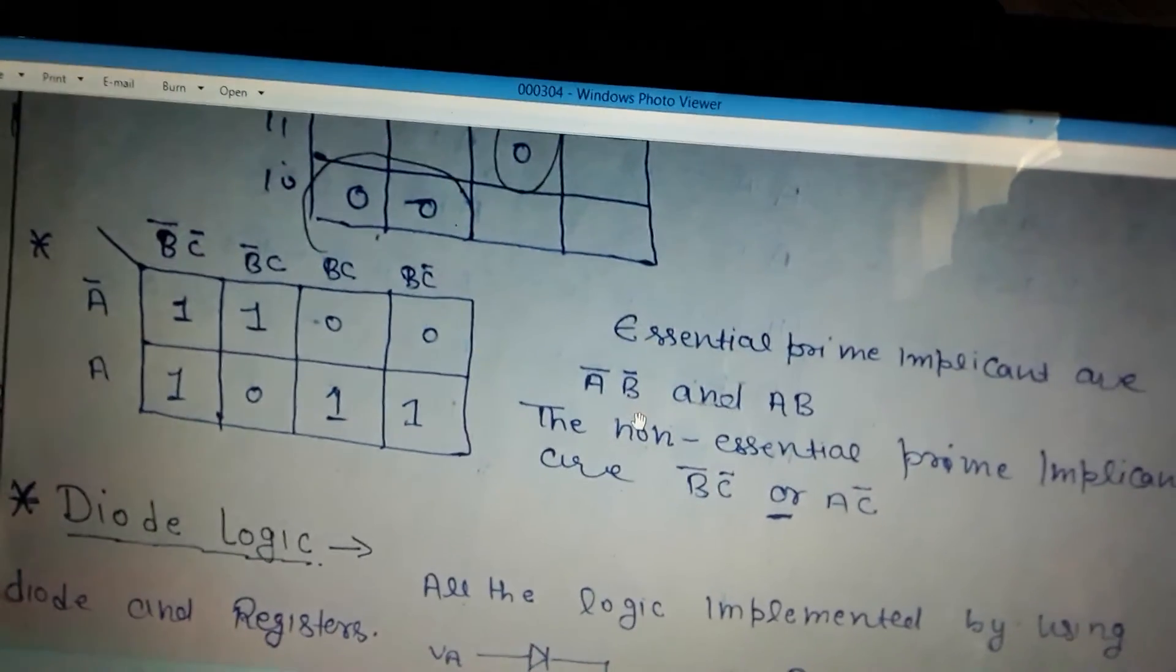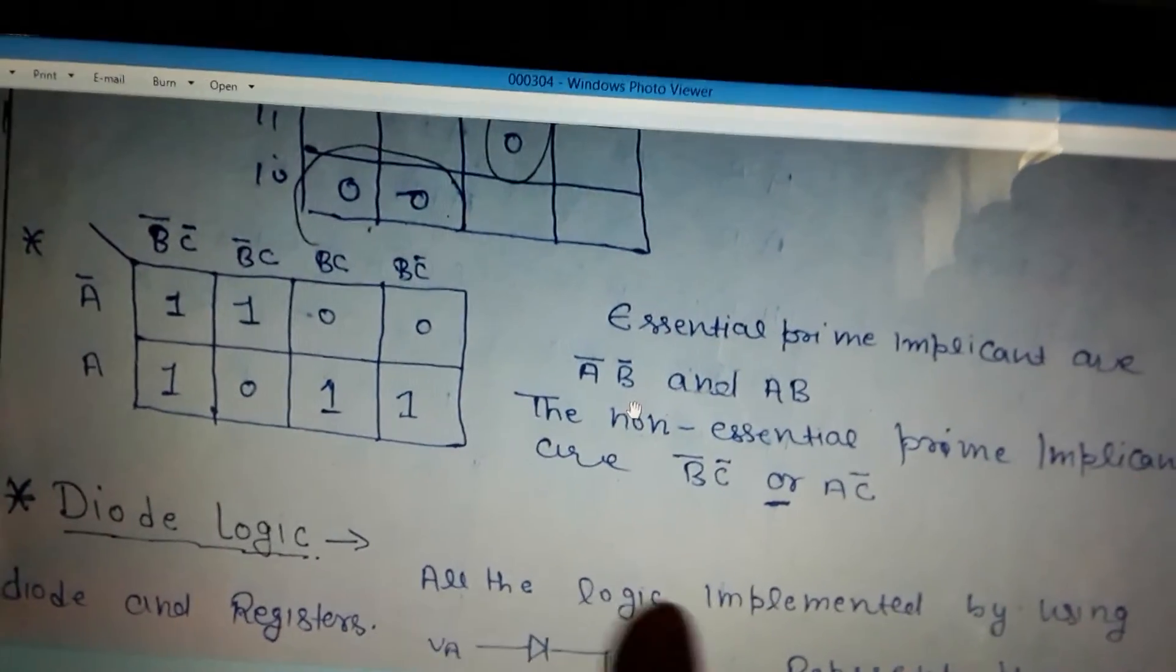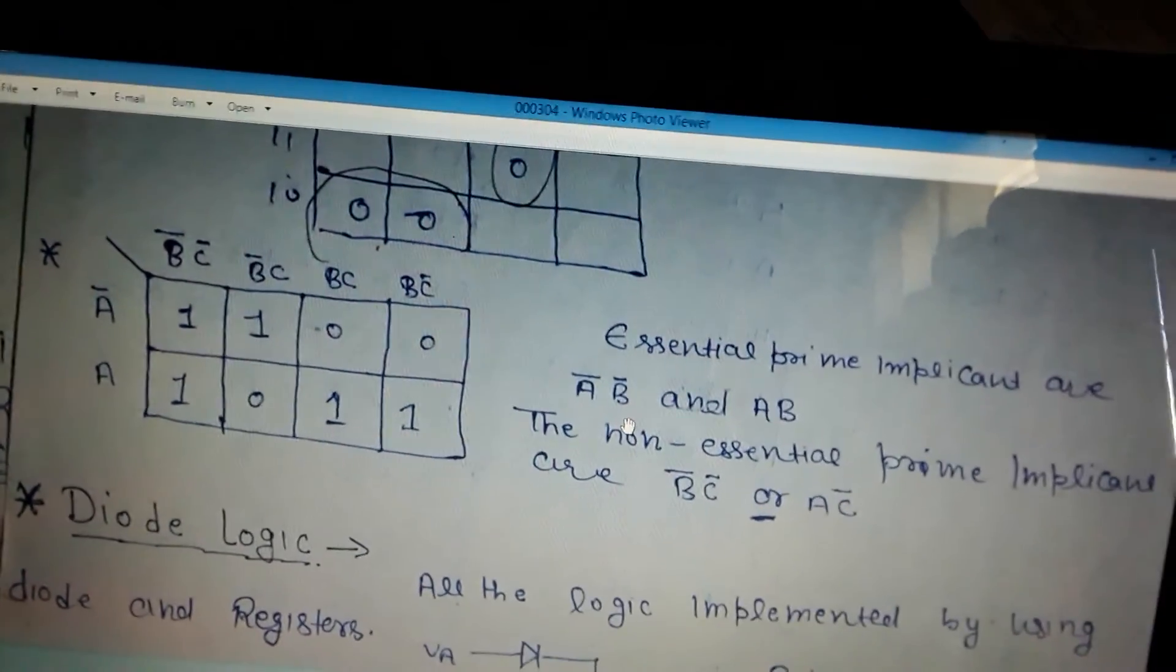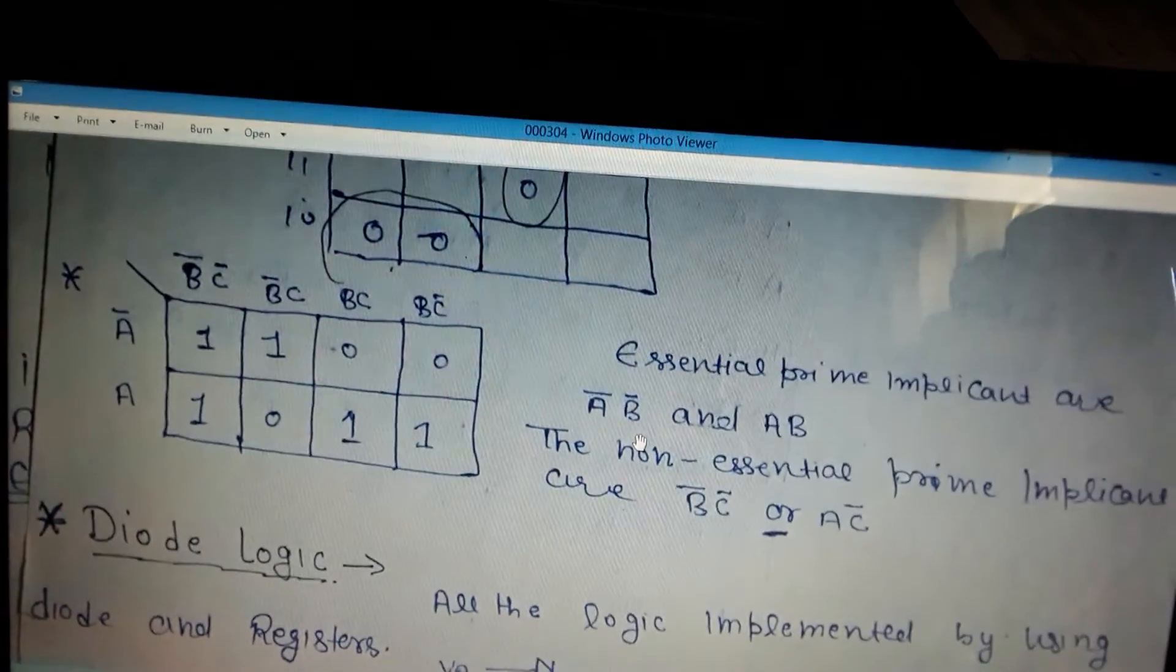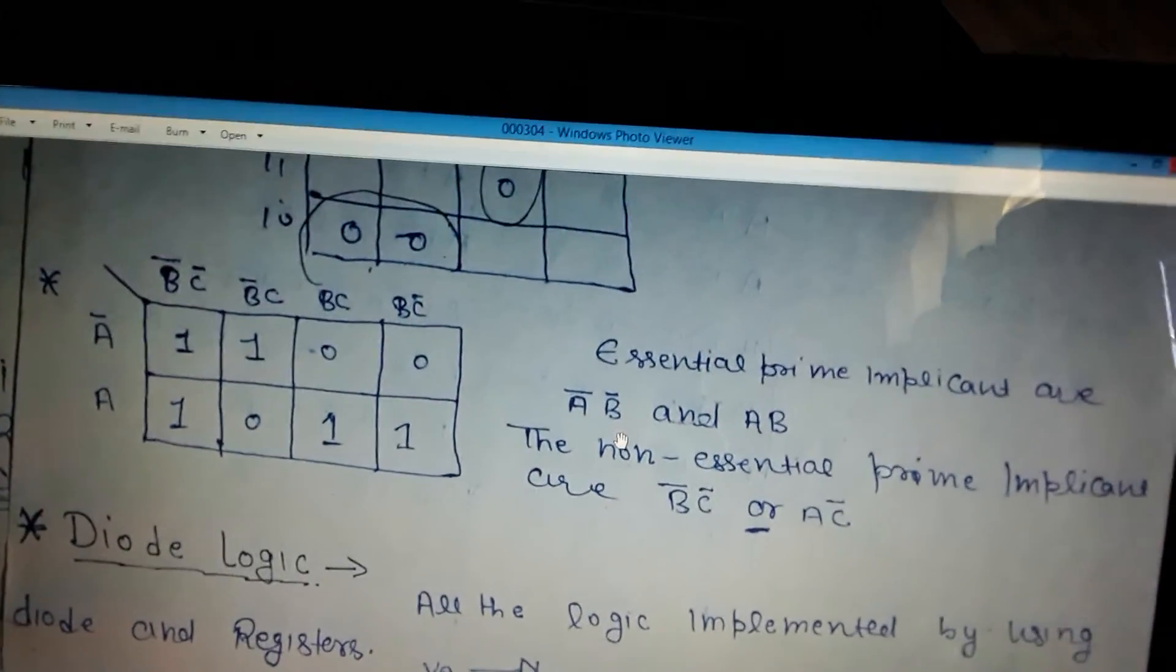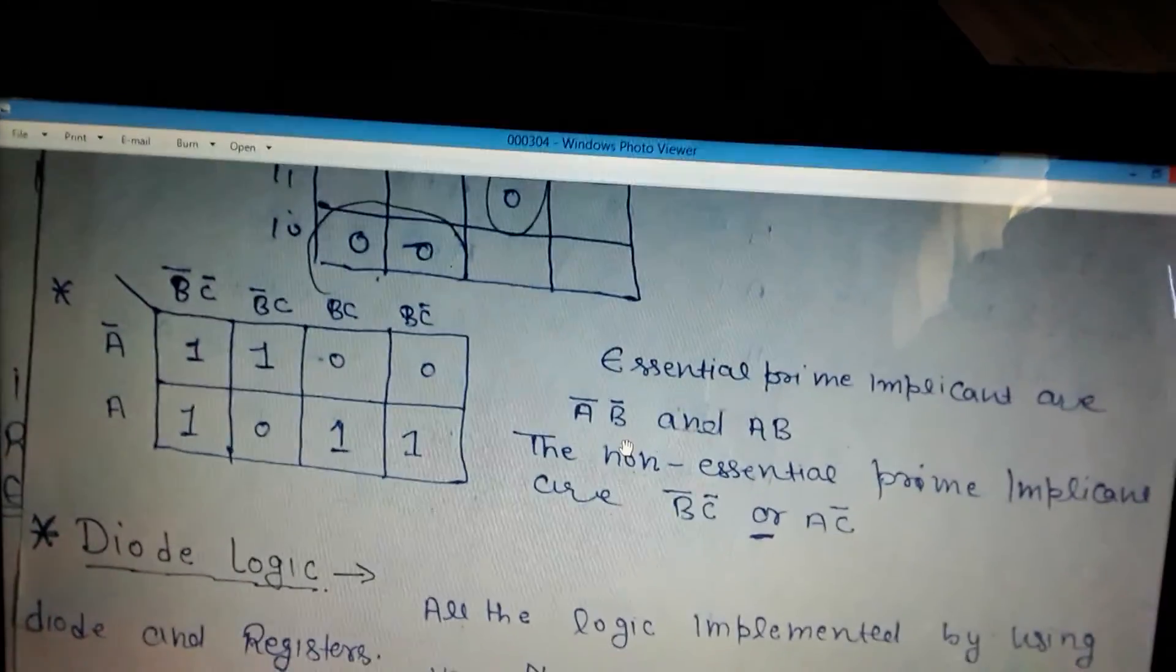All others are not essential, like B̅C̅ and AC̅. Thanks for watching and I hope you understand. If you don't understand, please comment and I will further explain. Thank you.